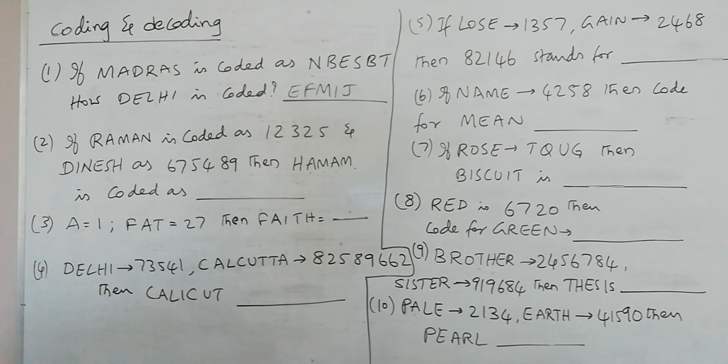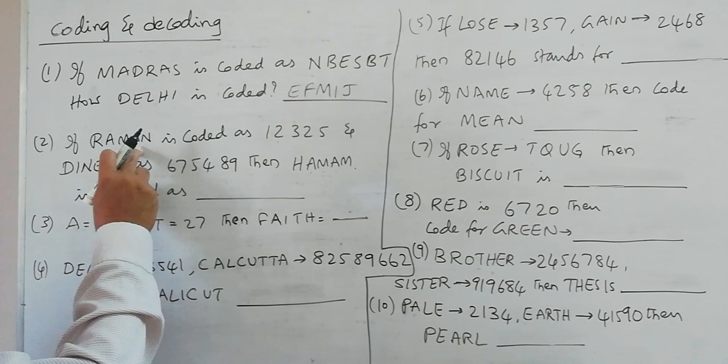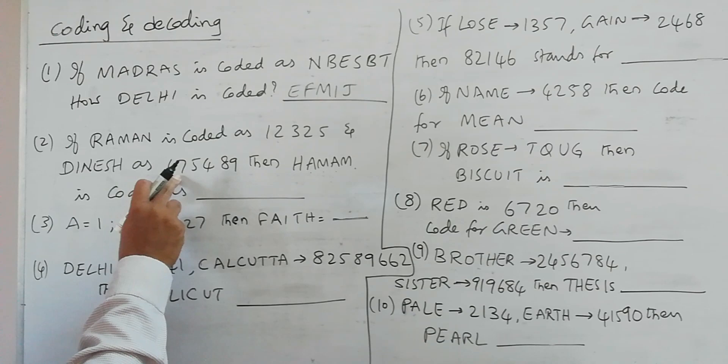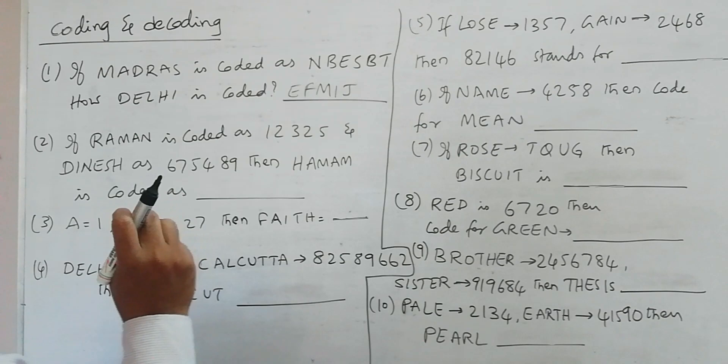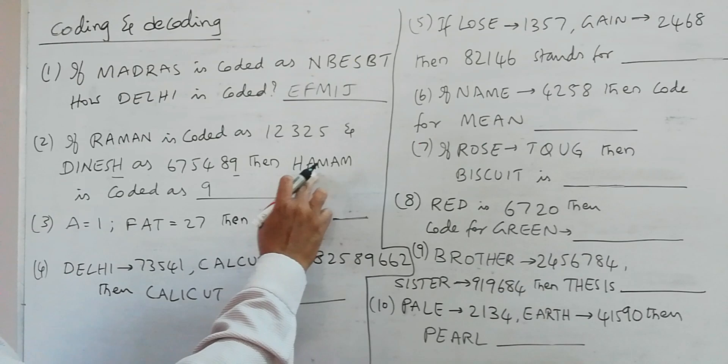And the second problem is RAMAN, R-A-M-A-N, is coded as 1-2-3-2-5, and DINESH is coded as 6-7-5-4-8-9. Then what is the code for HAMAM? So here H is 9, then A-M-A is here in RAMAN, the successive letters.